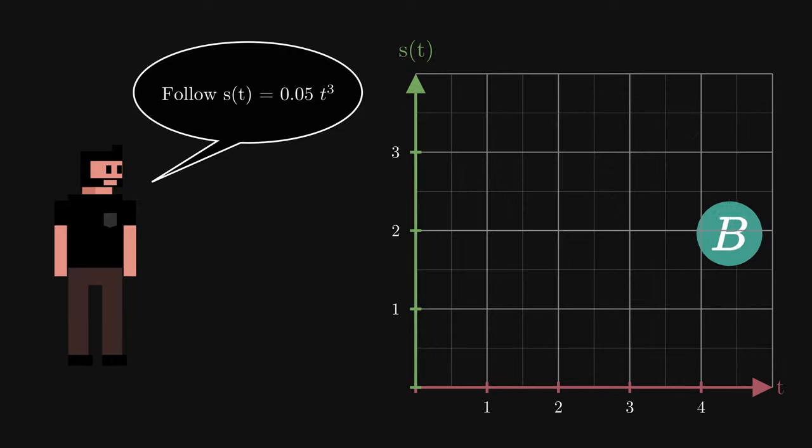For example, if you were to instruct particle B to travel along a straight line for 4 seconds such that the distance it travels after t seconds is exactly 0.05 t cubed, particle B does that for you. It is loyal and mathy for a reason.